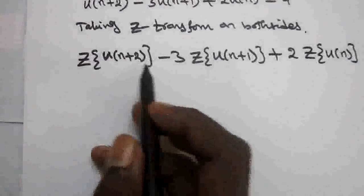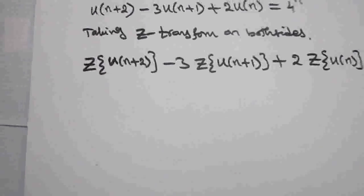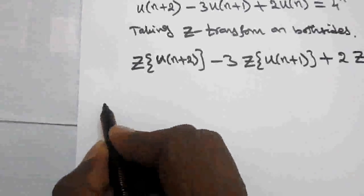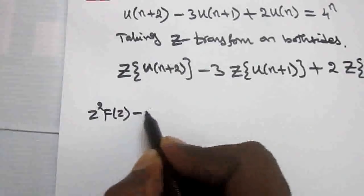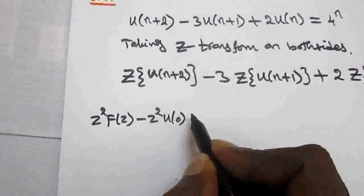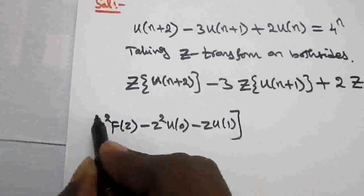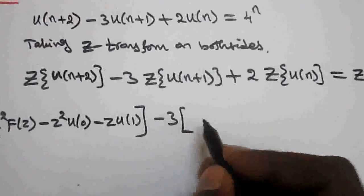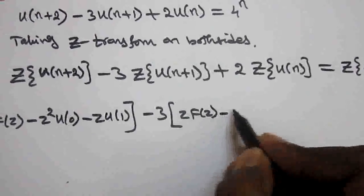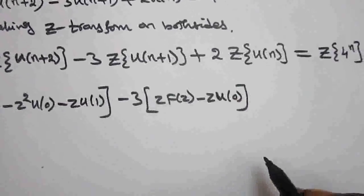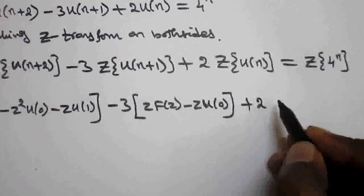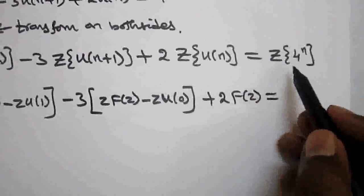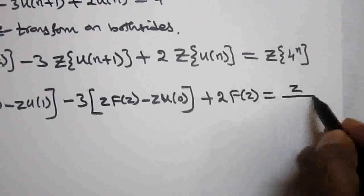Using the formula: Z-transform of u(n+2) equals z²·F(z) minus z²·u(0) minus z·u(1). Z-transform of u(n+1) equals z·F(z) minus z·u(0). Z-transform of u(n) equals F(z). And Z-transform of 4^n equals z/(z−4), since Z-transform of a^n equals z/(z−a).